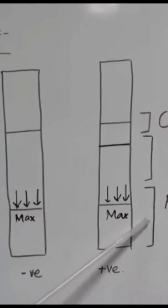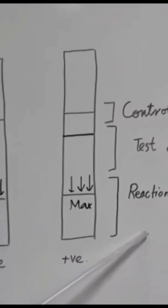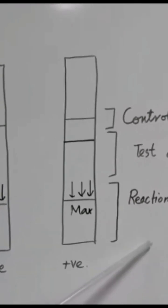First one, the reaction zone. This zone contains antibodies for HCG alpha chain.